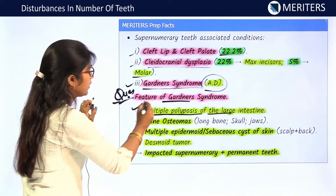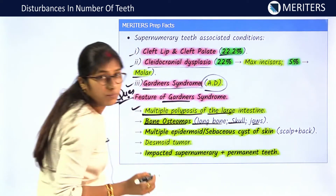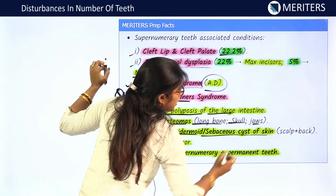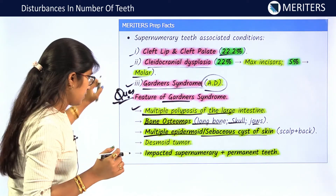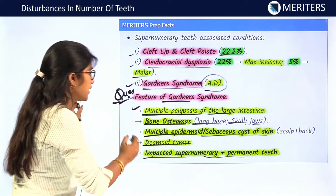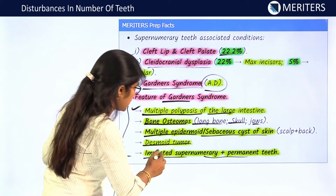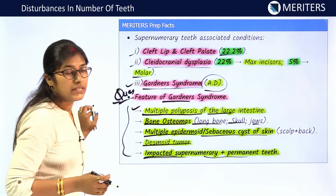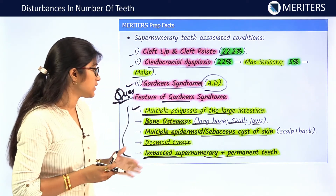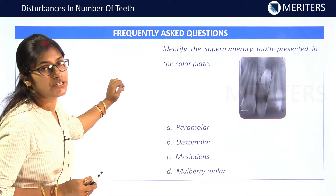Features of Gardner's syndrome: multiple polyposes of the large intestine — a very prominent feature; bone osteomas present in long bones, skull, and jaws; multiple epidermoid sebaceous cysts of the skin, particularly on the scalp and back; desmoid tumors; and impacted supernumerary and permanent teeth. You should know all these features as they are commonly asked in exams.